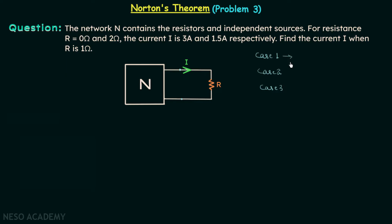In case 1, when R is equal to 0, I is equal to 3 amperes. In case 2, when R is equal to 2 ohms, I is equal to 1.5 amperes. Let us now move on to case 3, when R is equal to 1 ohm, we need to find current I.